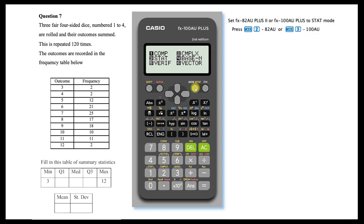Or MODE then 3 on a 100AU. To perform a one-variable analysis, select option 1.